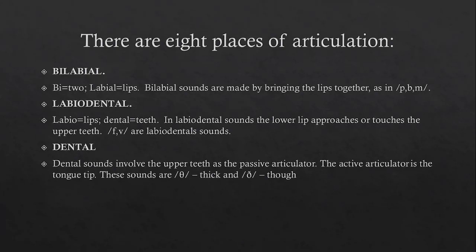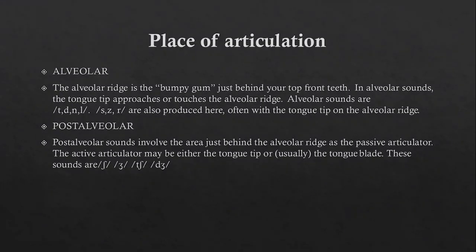So the tip of the tongue touches the upper teeth. There are two sounds: the voiced 'th' and the voiceless 'th'. Then we have alveolar sounds. The alveolar ridge is the bumpy gum just behind your front teeth — there is a rough area called the alveolar ridge.